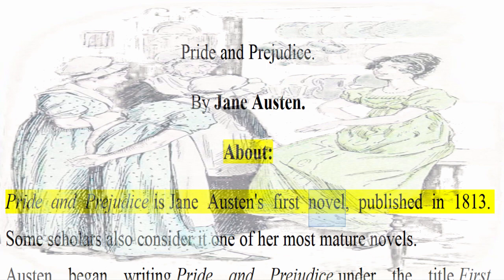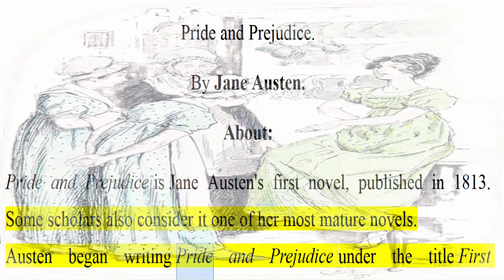Pride and Prejudice by Jane Austen. Pride and Prejudice is Jane Austen's first novel, published in 1813. Some scholars also consider it one of her most mature novels. Austen began writing Pride and Prejudice under the title First Impressions in 1796, at the age of 21.